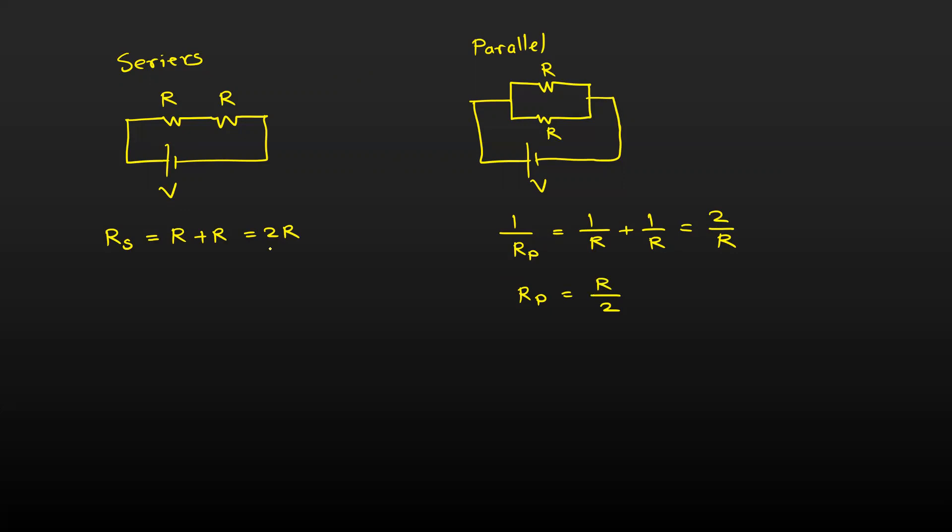For the series combination, the equivalent resistance increases. For the parallel combination, equivalent resistance reduces. So let's find out the heat produced from the Joules law of heating.